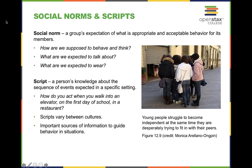Social norms are a group's expectation of what is appropriate and acceptable behavior for its members. When you establish yourself within a particular group or setting, there are expectations about how you're supposed to behave and think — what you wear, what you talk about. This applies to your friend group, church, being a fan of a particular team, and many other settings.